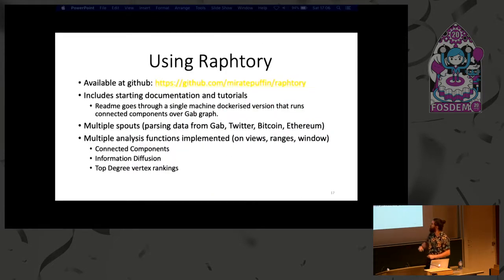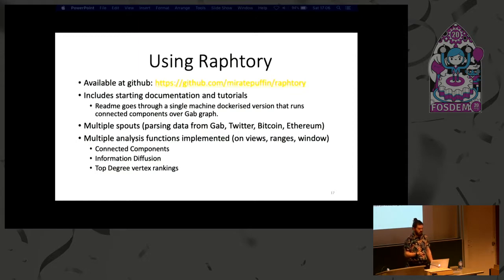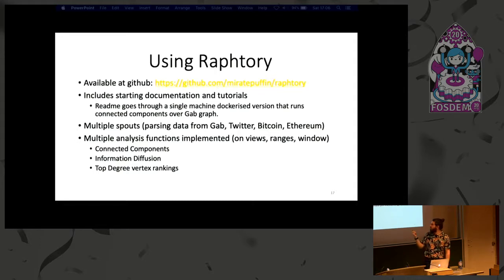If you are interested in using Raftree, it is available on GitHub. It's all Dockerized and has some scripts to run it, which I'm working on improving. There are examples of the actual GAB graph. We've got loads of spouts for ingesting different data: GAB, Twitter, Bitcoin, Ethereum, and loads of other random ones. We have actually ingested the whole Bitcoin and Ethereum graphs over a big cluster of machines and are working with a couple of different companies on know-your-customer entity resolution. We also have multiple analysis functions: connected components, page rank, information diffusals — like spreading taint across cryptocurrency — and simple things like degree ranking.